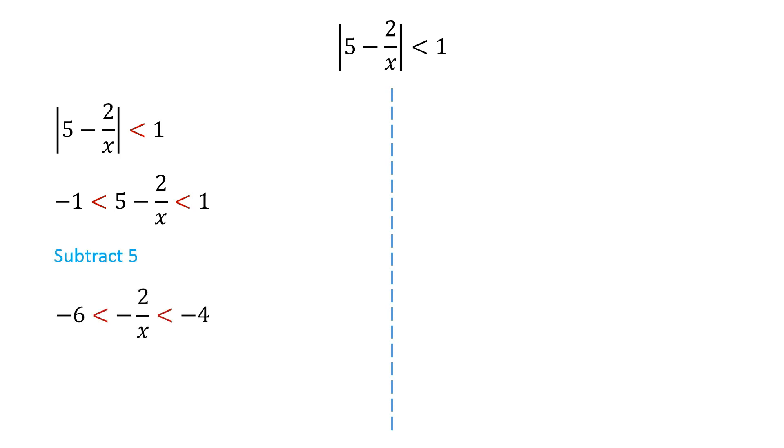Subtracting 5 from this inequality we get, negative 2 over x is greater than negative 6 and less than negative 4.